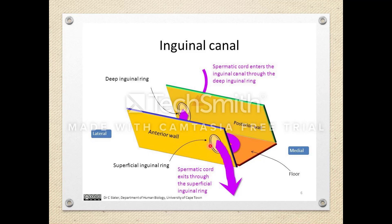In the weaker parts there are openings. The deep inguinal ring is present in the posterior wall in its lateral part, and the superficial inguinal ring is in the anterior wall in its medial part. The deep inguinal ring is an opening in the fascia transversalis; the superficial inguinal ring is in the external oblique aponeurosis. Structures like the spermatic cord enter through the deep inguinal ring, pass through the canal, and exit through the superficial inguinal ring.